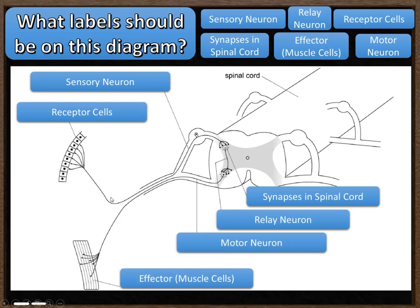This set of neurons already exists, so for the reflex action to occur the neural pathway is already there. It's really quick for this action to happen — I don't have to make decisions or work out which neuron the signal needs to travel down, because the pathway already exists. That is why my reflex action is so quick.